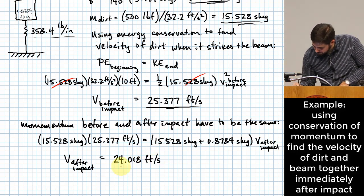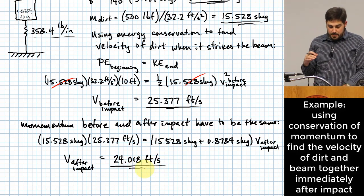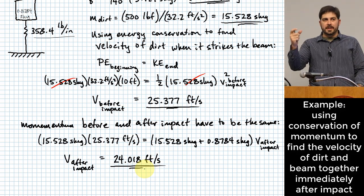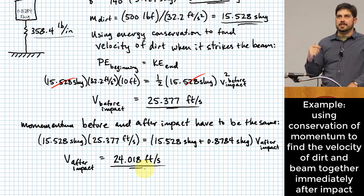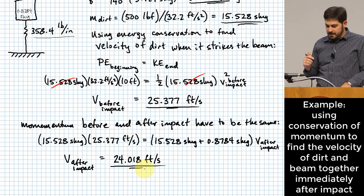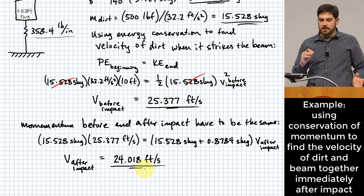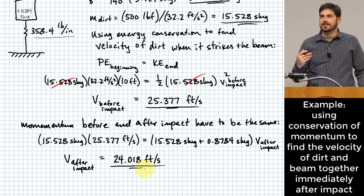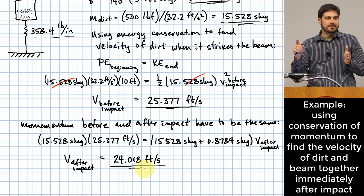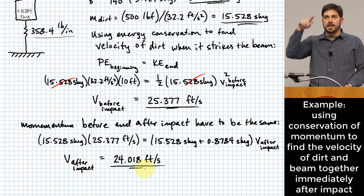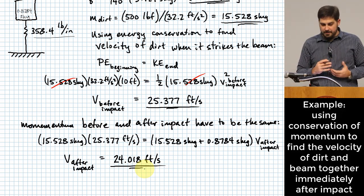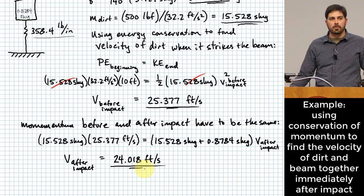This is assuming a single degree of freedom response — it's probably the strongest element but may not be complete. Think of it this way: if you hit the beam with a small hammer on the end, it would ring, meaning it's not a single DOF response — the whole thing has vibrations going through it. But with a soft clump of dirt like this, this might be an acceptable way to model it.